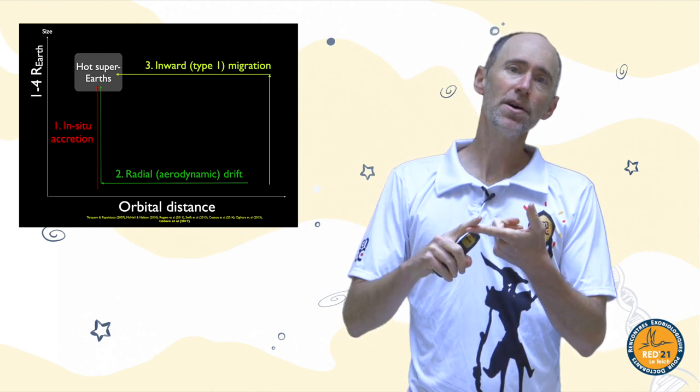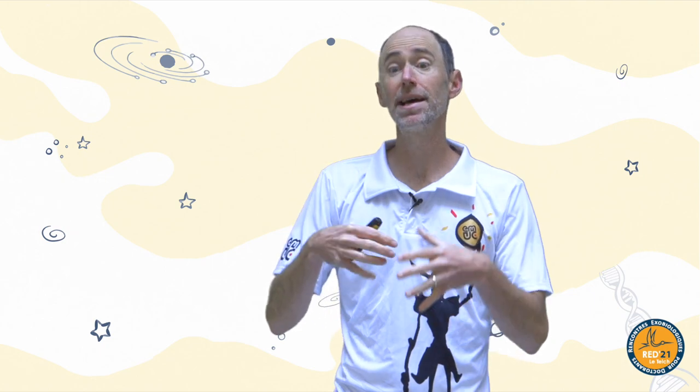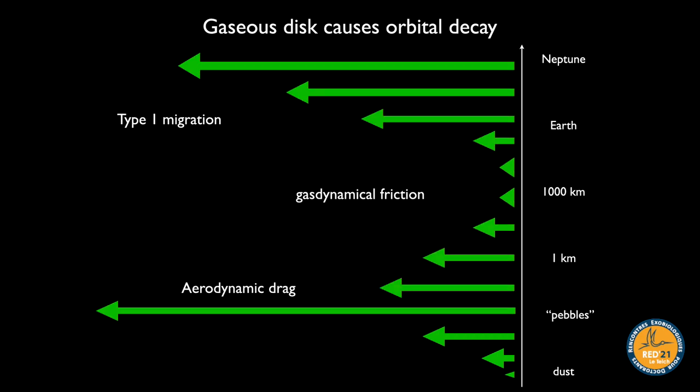The third idea is the migration model, where larger objects like planetary embryos or near full-size planets grow mostly further out but then migrate inward. Both the drift model and the migration model are plausible; the in situ model is not. The inward drift happens at pebble sizes due to aerodynamic drag, and at large sizes due to migration. Objects in between don't drift as fast, which is why these two models correspond to small or large size scales.